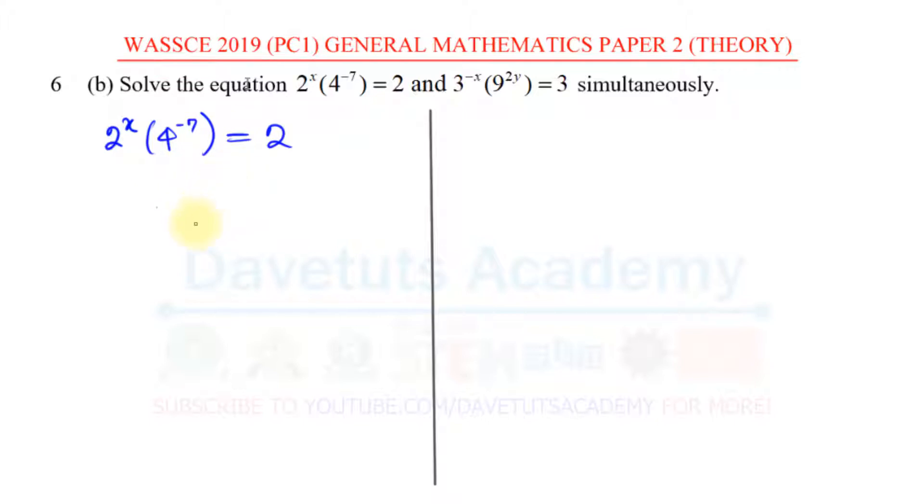So let me do that and divide by 4^(-7) over 4^(-7). This will cancel so that I now have 2^x = 2 ÷ 4^(-7).